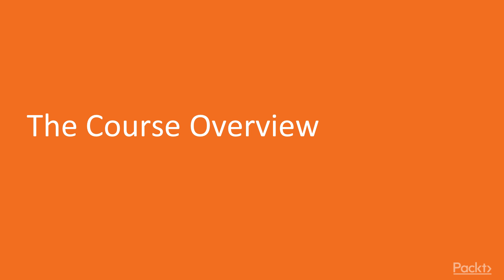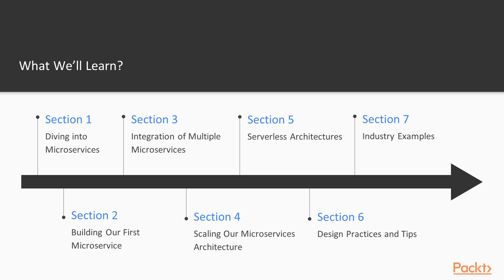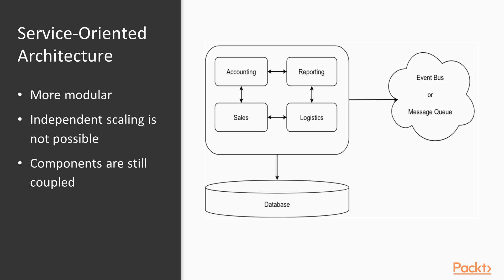Let's have an overview of the course, outlining the main structure and what we will be studying in each section. This course consists of 7 sections. In the first section, we will introduce the term of a microservices architecture and look at the evolution from previous architectures, explaining what factors contributed to the success of the microservices movement.